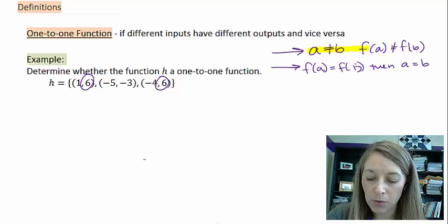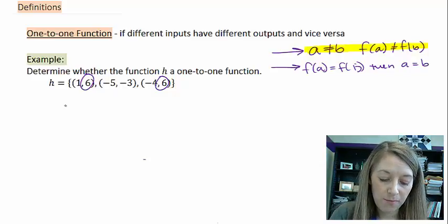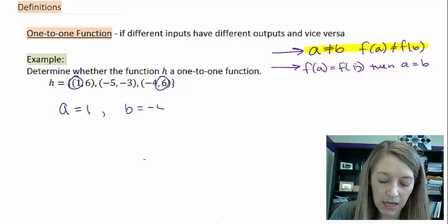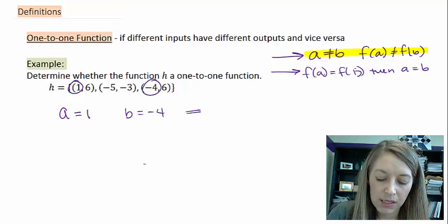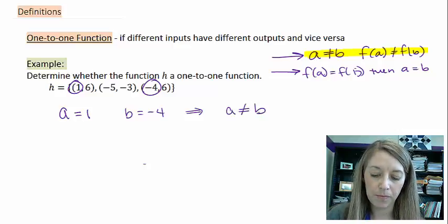Now, I'm going to start with the first one to prove that this is not a function. So, if my a value is equal to 1, and I'm picking 1 because that's what I see here. And my b value is negative 4, and that's what I see here. And we see that in this case, a is not equal to b.